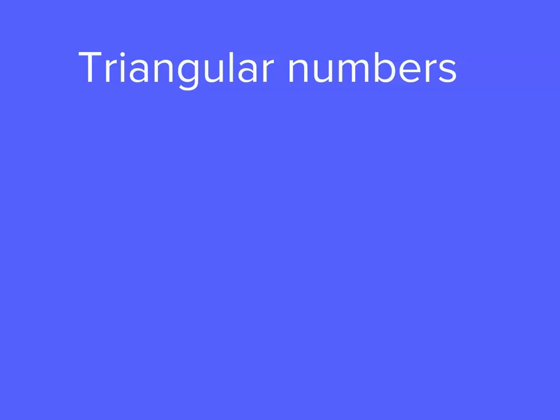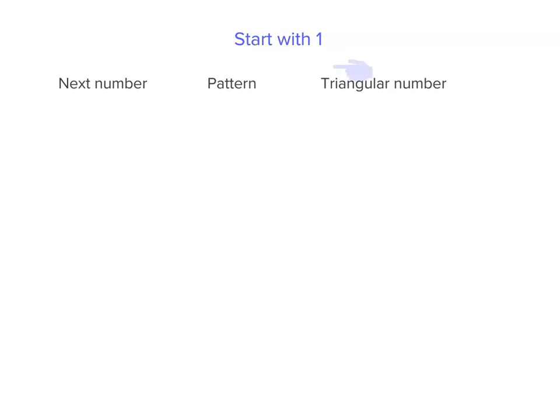Now triangular numbers are interesting and they make a really neat pattern. We start with the number 1 and we draw a dot and we can put a triangle around it, but it's a bit hard to get the pattern with the first one, but that's our first triangular number.